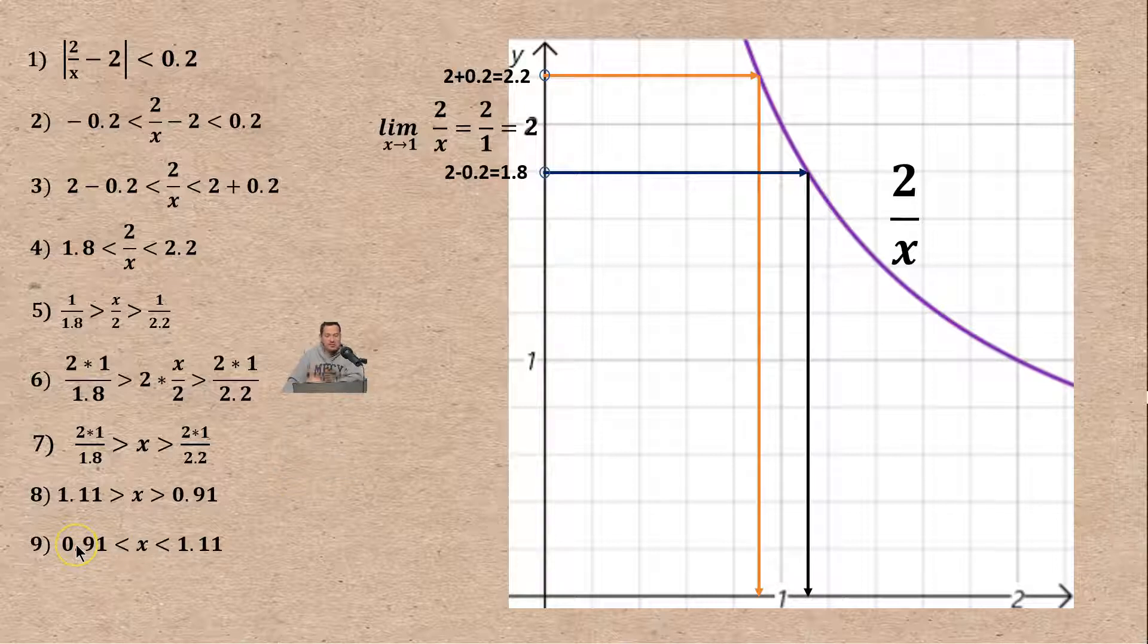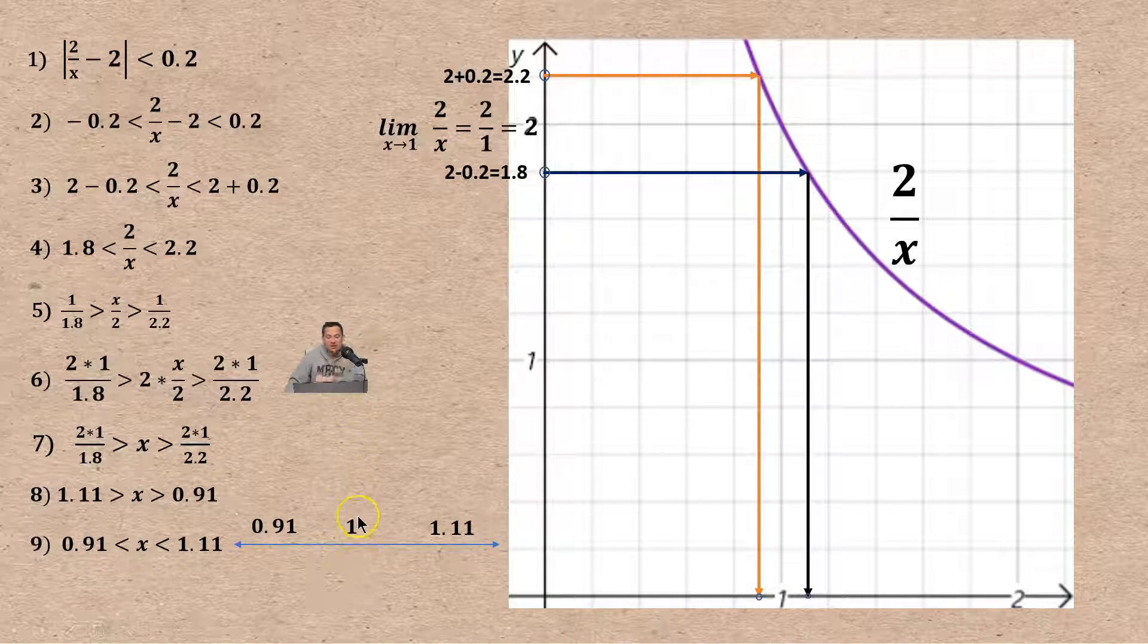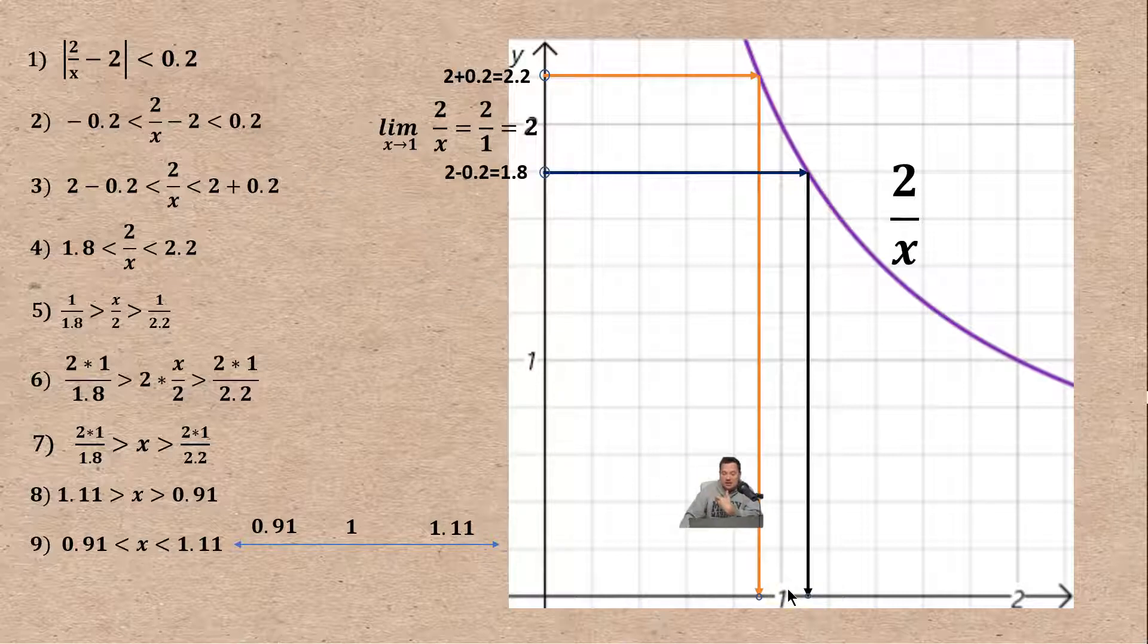Let's depict step number nine on a number line. You mark 1 in the middle. That one in the middle is present because remember the limit as x approaches one. That's in the picture, the one is in the middle there between the arrows. To the left I have 0.91 and to the right I have 1.11.